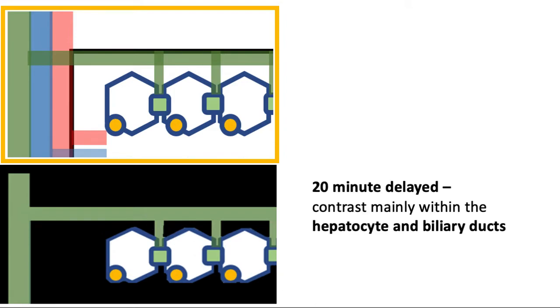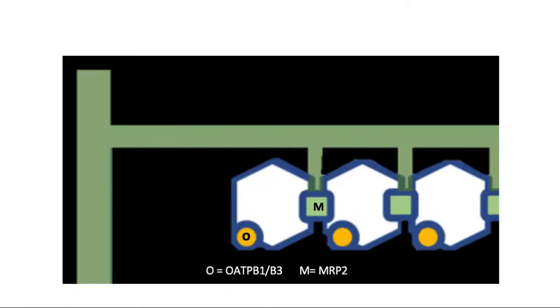Again, recall that in a normal hepatocyte, imaging at the 20-minute delayed phase, or hepatobiliary phase, will show that liver-specific contrast is mostly within the hepatocytes and in the biliary ducts. Hence, it's called the hepatobiliary phase. Hepato because of the hepatocytes and biliary because they're in the biliary ducts. Now, how does the contrast travel from the sinusoid and into the biliary tree? Let's take a look at this diagram.